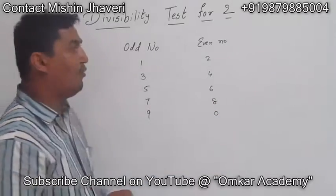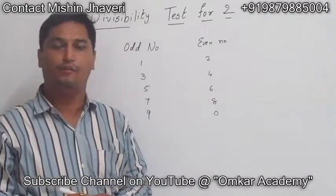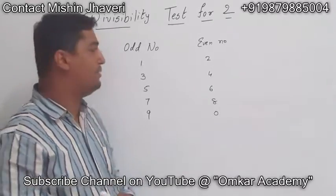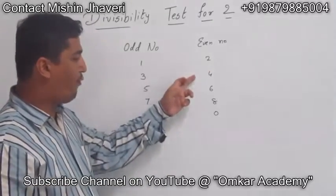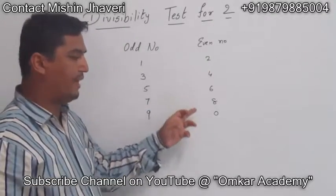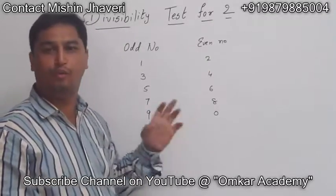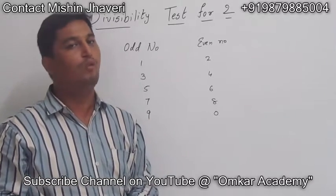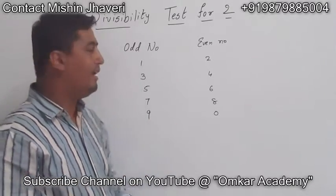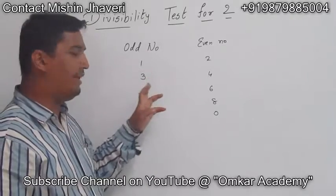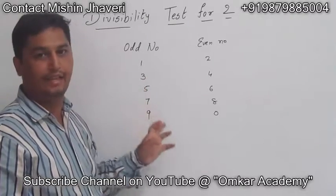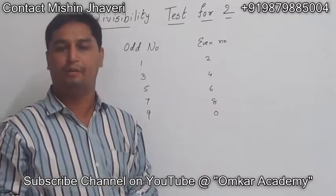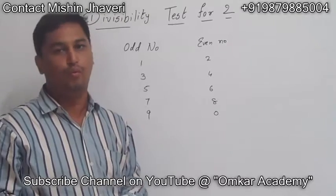Now for the divisibility test for 2: if a number ends with 2, 4, 6, 8 or 0, then we consider that it is divisible by 2. If it ends with 1, 3, 5, 7 or 9, we consider that it is not divisible by 2.